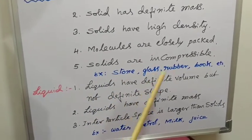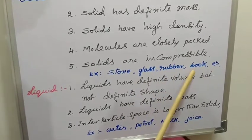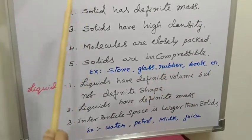Example: stone, glass, rubber, book, and some more are the examples for solids.